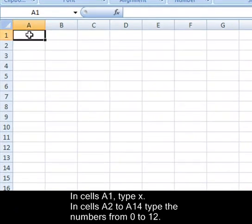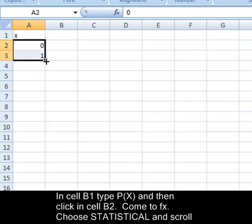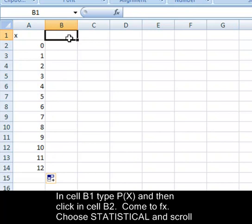In cell A1, type x. In cells A2 to A14, type the numbers zero to twelve. In cell B1, type P(x), and then click in cell B2.